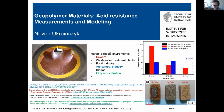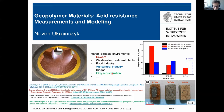First, a short introduction: why do we need acid-resistant materials? Most of our infrastructure is made from concrete — it's the most used material after water. We also have very harsh bio-acid-induced environments, such as sewers, wastewater treatment plants, food industry, agriculture, biogas, and CO2 sequestration. For all of these, we need acid-resistant infrastructure materials.